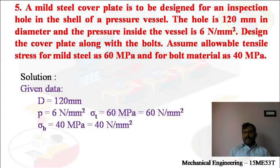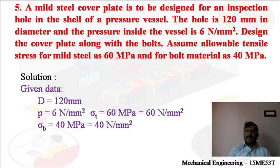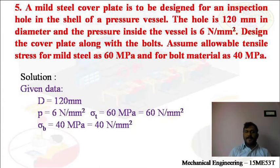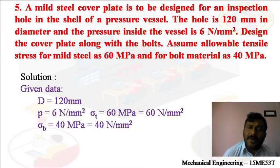Next problem: A mild steel cover plate is to be designed for an inspection hole in the shell of a pressure vessel. The hole is 120 mm in diameter and the pressure inside the vessel is 6 N per mm squared. Design the cover plate along with the bolts. Assume allowable tensile stress for mild steel as 60 MPa and for bolt material as 40 MPa. Here, we have to calculate the size of the bolts as well as the size of the cover plate.